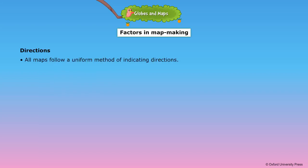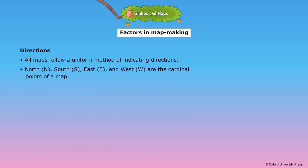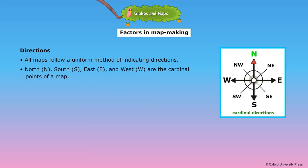All maps follow a uniform method of indicating directions. North, south, east and west are the cardinal points of a map. The top portion of the map represents north. South is to the bottom, east is to the right and west is to the left. Most maps indicate the north with an arrowhead.